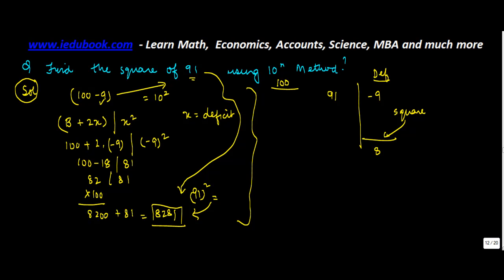Square of minus 9 gives you 81, that's a positive number. You add 91 plus minus 9, that gives you 82.